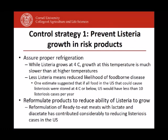The second strategy that has been effectively used is to reformulate products to reduce the ability of Listeria to grow. This has been particularly done in ready-to-eat meats in the US — sliced deli meats — which have been formulated with lactate and diacetate, which reduces growth. This has most likely considerably contributed to reducing listeriosis cases in the US. Anything industry can do to reduce Listeria growth will make major contributions to reducing the risk of cases and outbreaks.